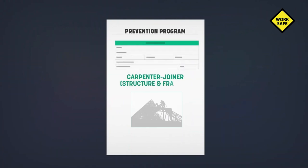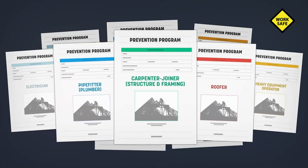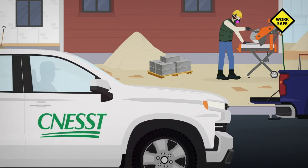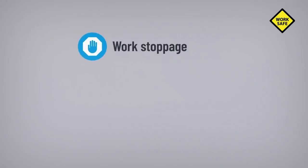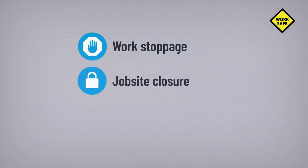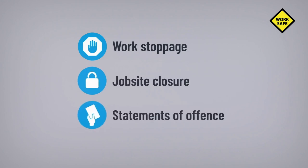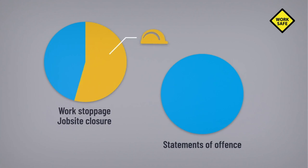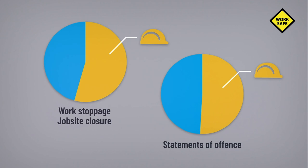Your prevention program is the best way to meet your responsibilities. If you are in breach of the rules, you could face a full or partial work stoppage, closure of the job site, and statements of offense. More than half of all work stoppages, site closures, and statements of offense are issued in the construction industry.